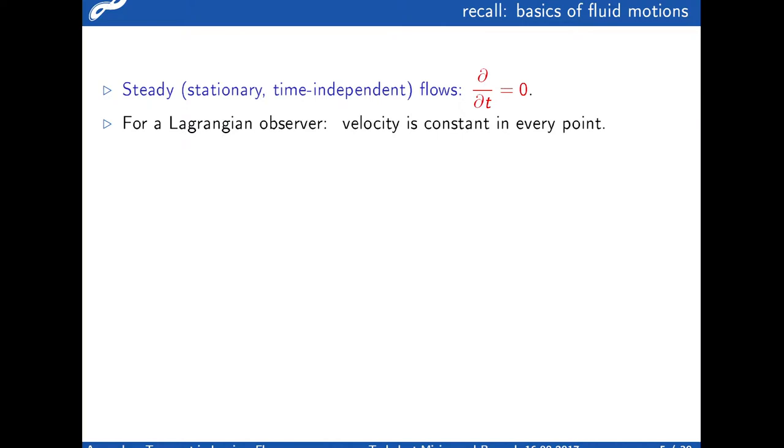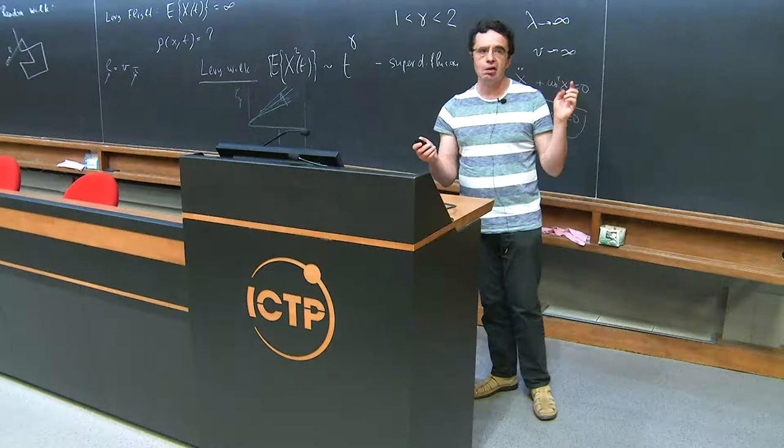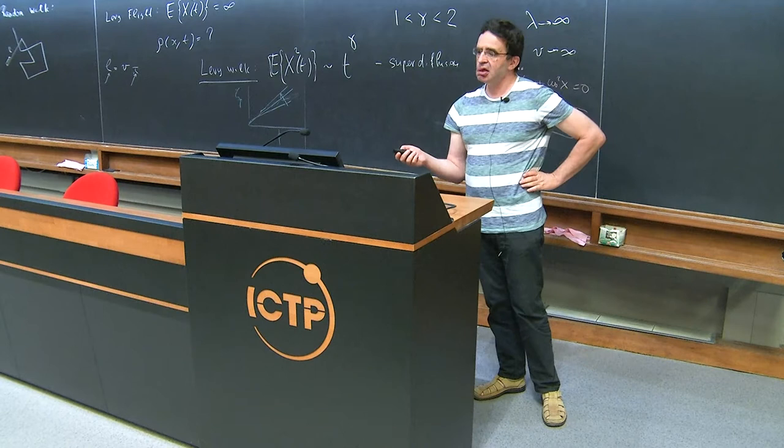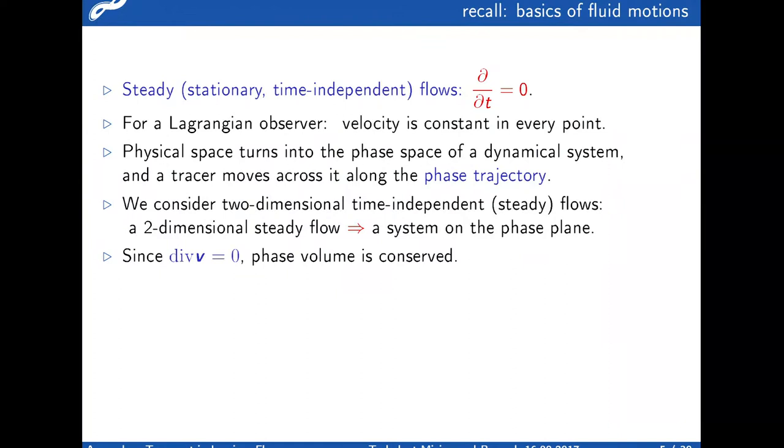To make things quite simple, I go to plane two-dimensional flows and discard time dependence. For an Eulerian observer, this would be boring and trivial. For a Lagrangian observer, the velocity is constant in every point, and this means your plane turns into a phase plane of a dynamical system.